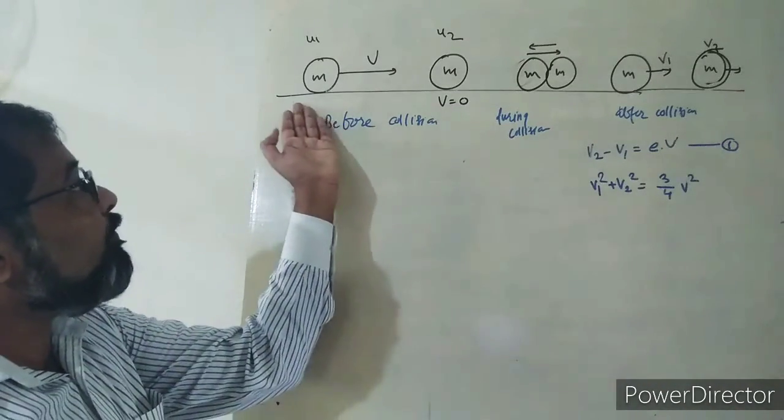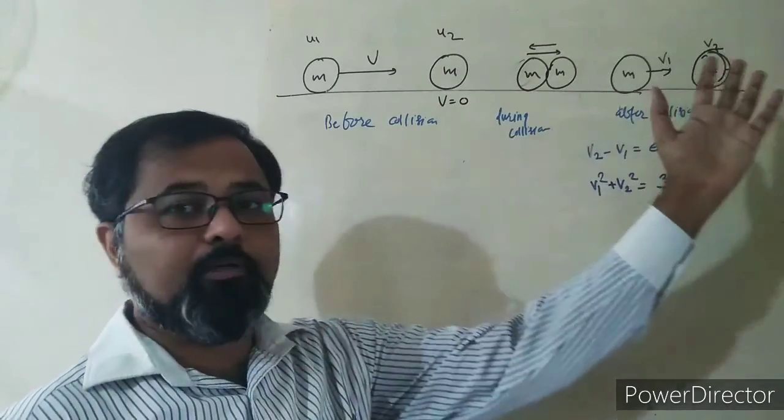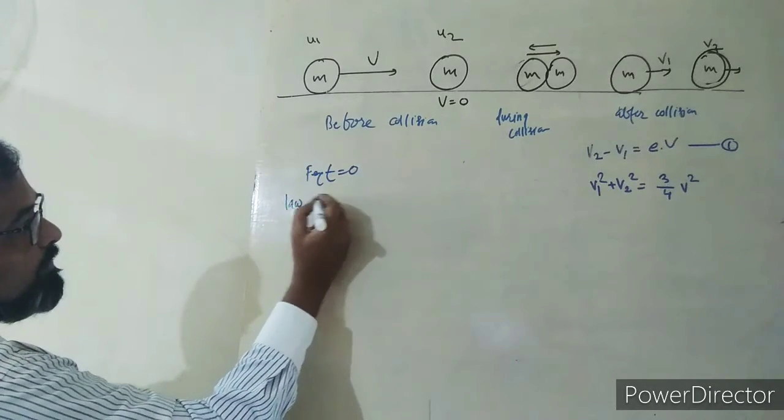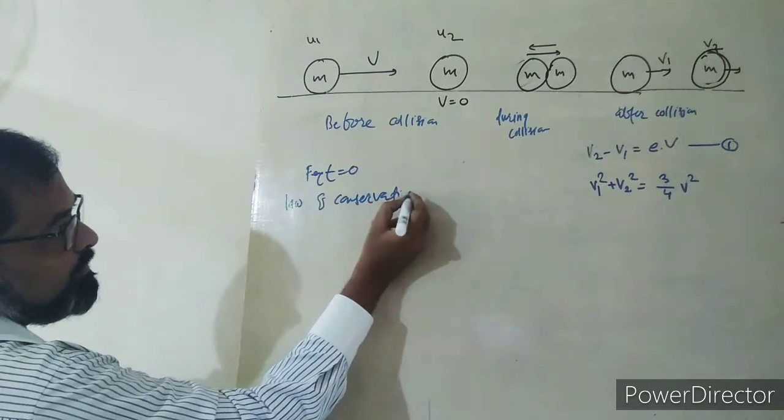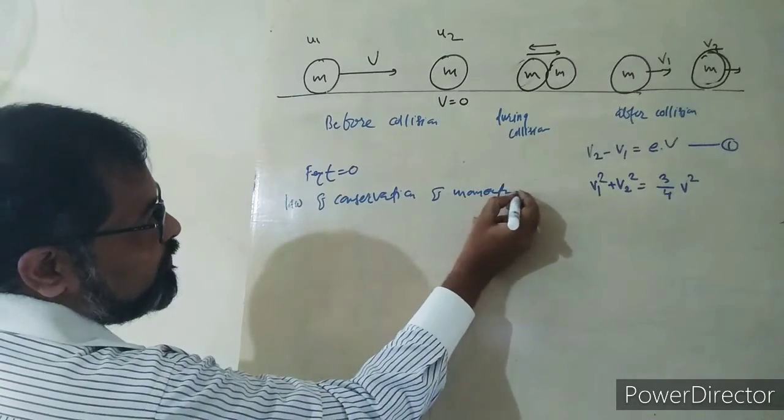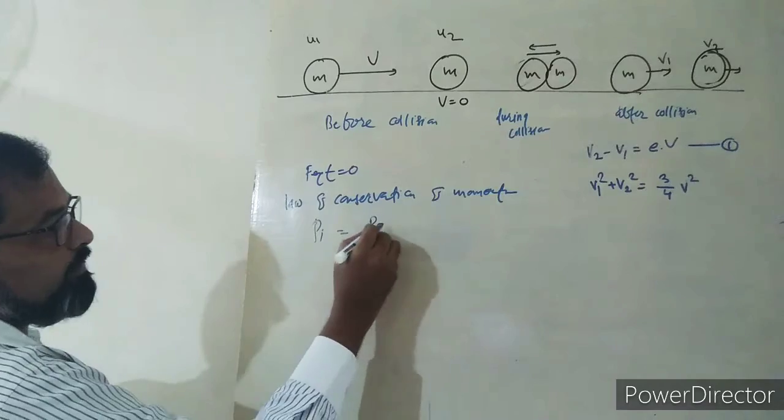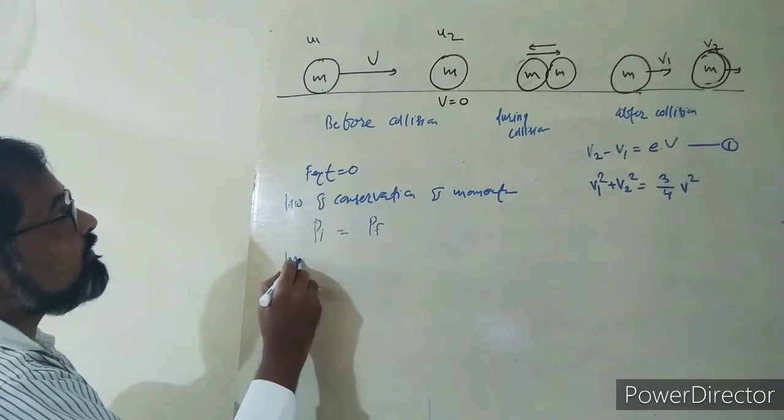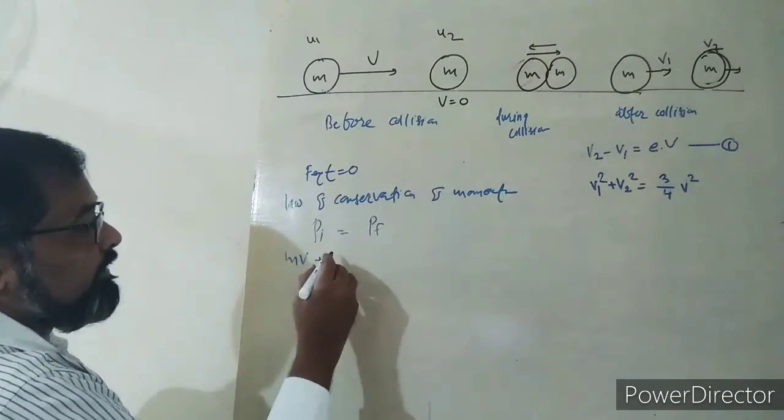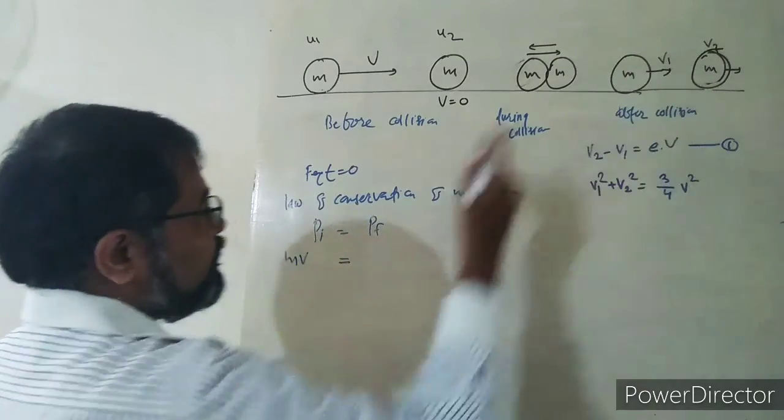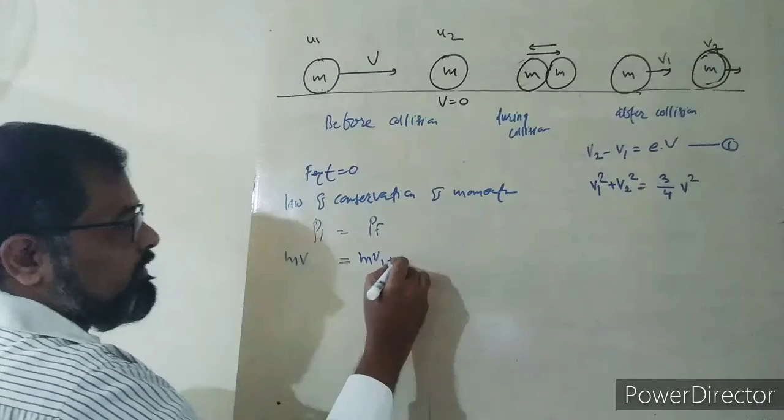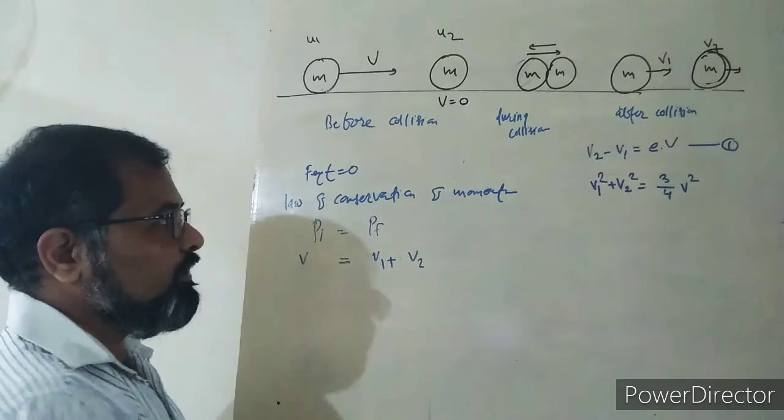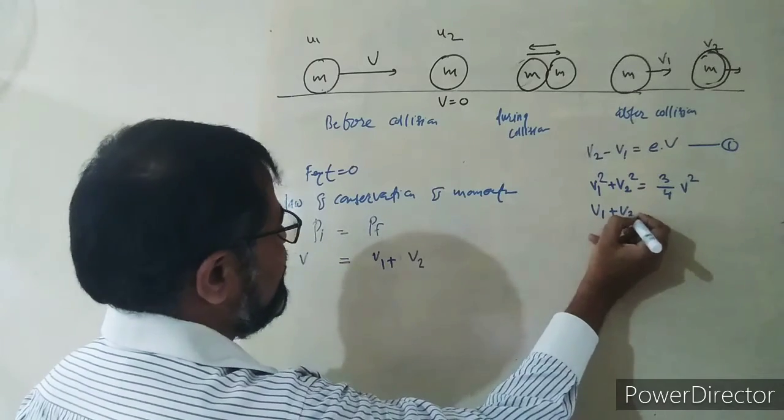Now we use the law of conservation of momentum. Initial momentum equals final momentum. Mass into velocity of the first body plus zero equals mass into its velocity v1 plus mass into velocity v2. Therefore, v1 plus v2 equals v. This is equation 3.